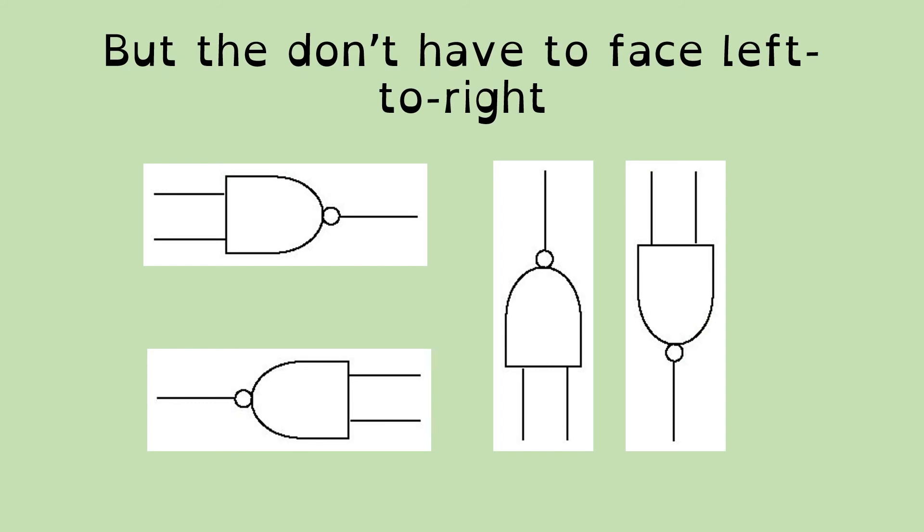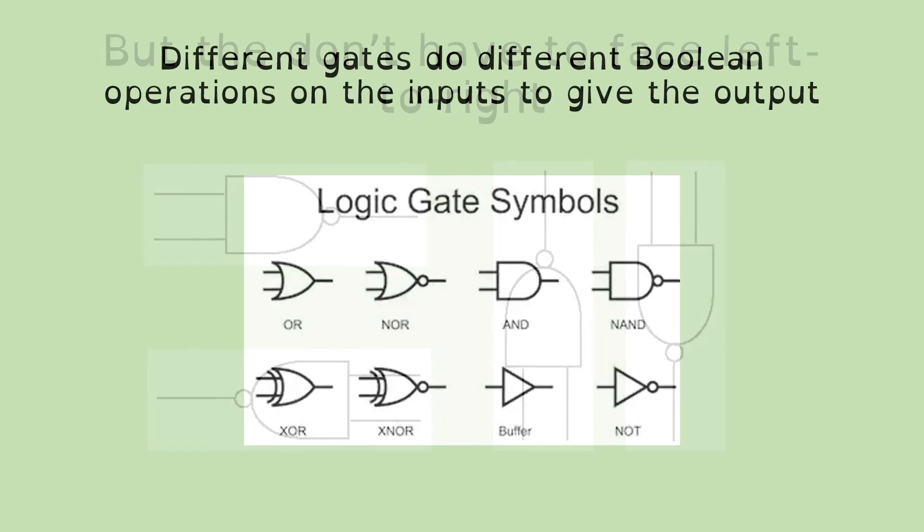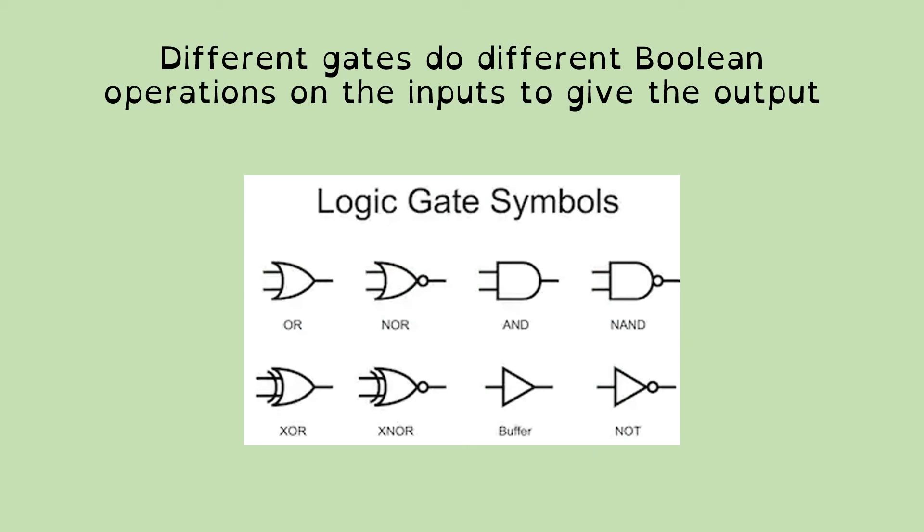They don't have to face left to right. And this can be confusing for people. So I've got pictures of facing left, facing right, facing up, facing down. The important thing is once you get used to what the symbols are, you will know which are the inputs and which are the outputs. They're generally not labeled and you have to get used to looking at them and working it out. And as I said, the different gates do different things on the operations.